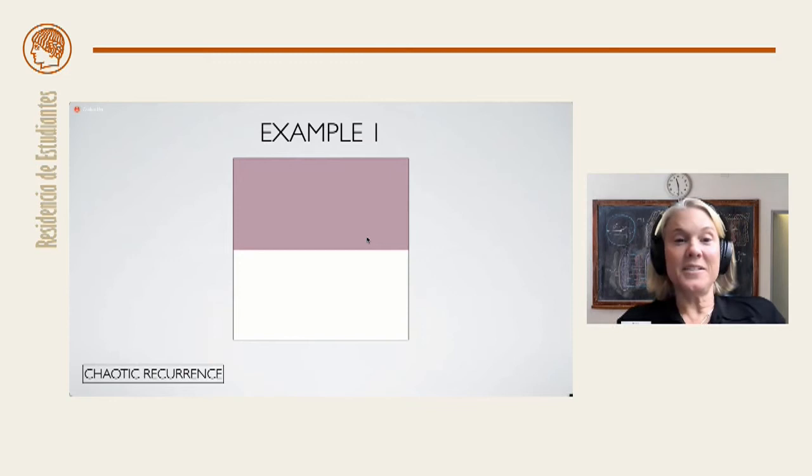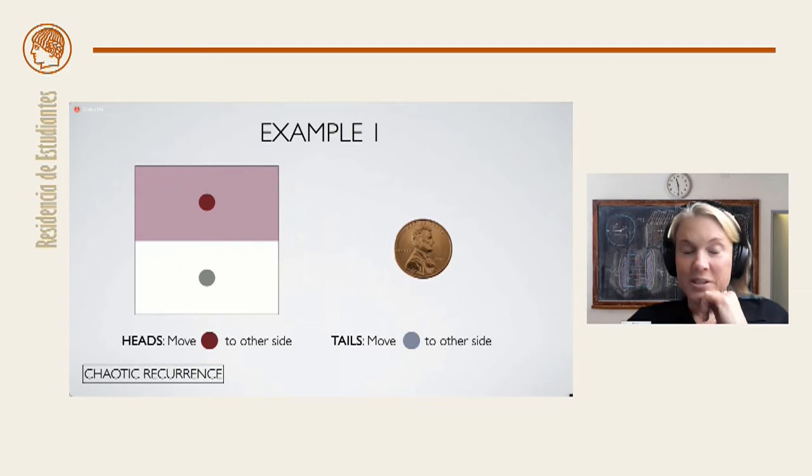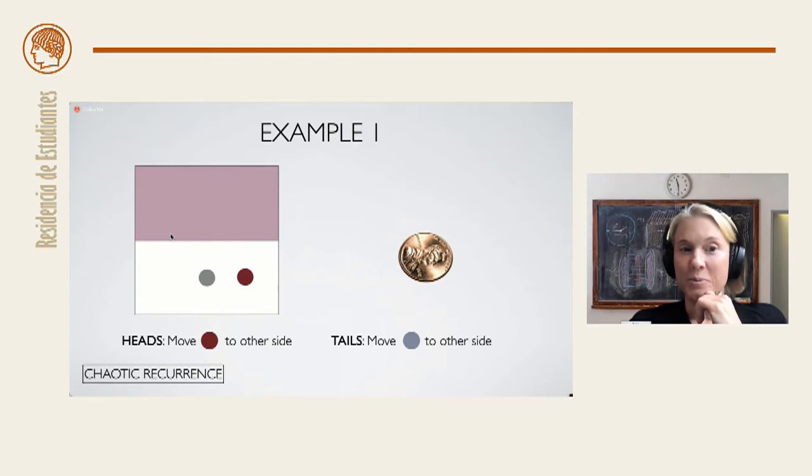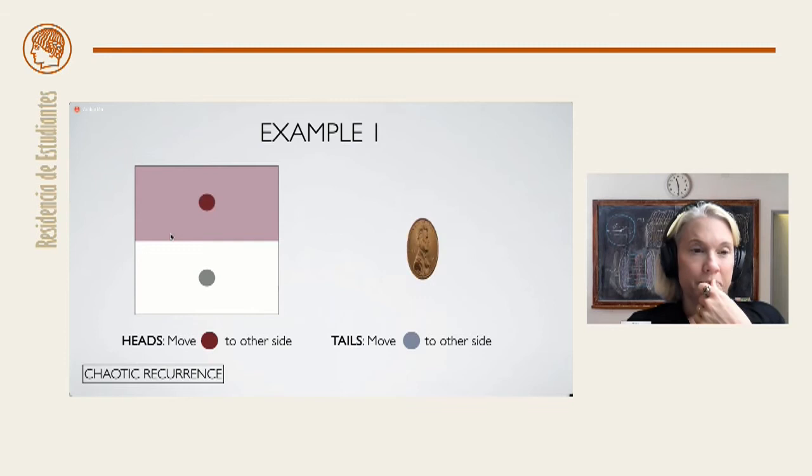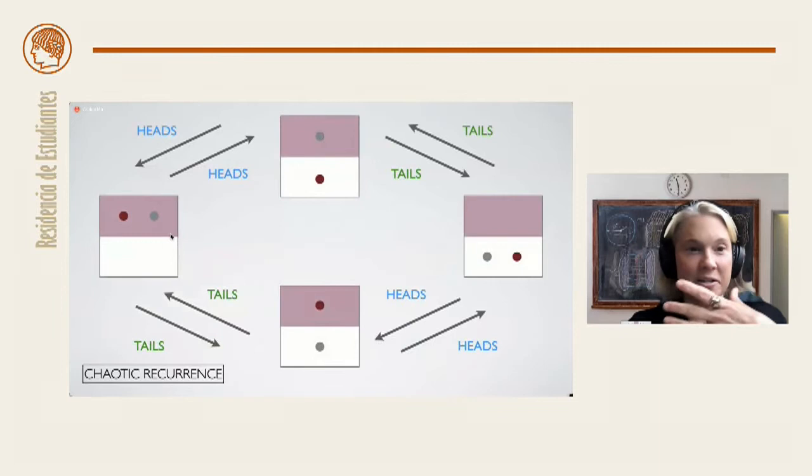So, to construct our first example of a chaotic dynamical system, we start with a box with two chambers, one red and one white. We also have two balls, one red and one gray. At any given time, each ball can be in either chamber of the box. For our initial state, we put a red ball in the red half and a gray ball in the white half. The rules for this particular dynamical system require that we flip a coin. If it comes up heads, we move the red ball to the other chamber, the one that it's not presently occupying. If it comes up tails, we move the gray ball to the other chamber. So, a very simple set of rules.